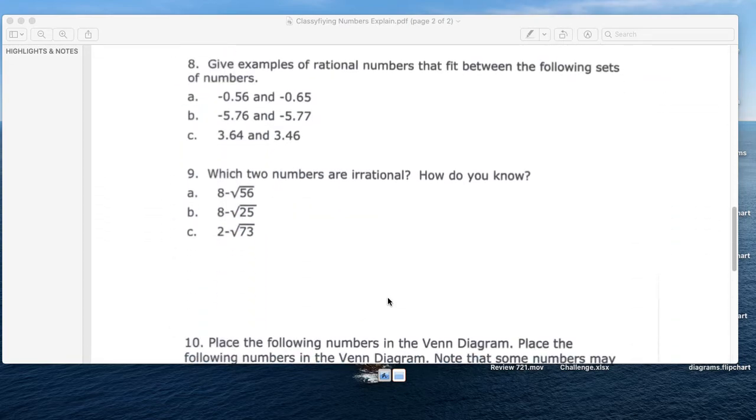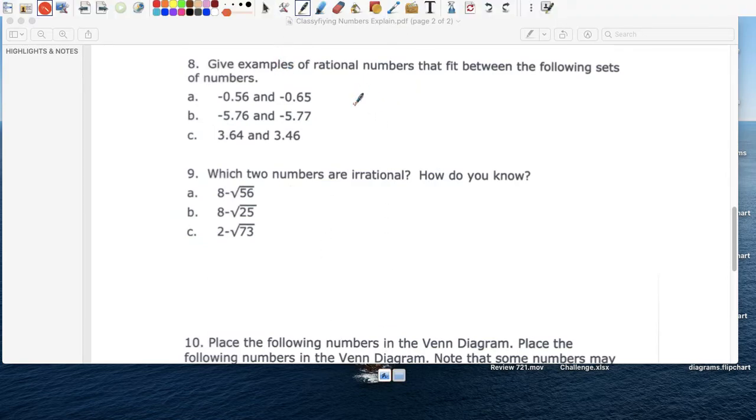Number eight, give examples of rational numbers that fit between the sets of numbers. 0.56 and 0.65, let me draw a number line. So this is zero, and this is one, and this is negative one. And then, 0.56 would be somewhere around here. 0.56 negative, and then 0.65, it's right there. There's 0.65, so a number that's in between these two spots here. Well, let's don't complicate things, about 0.57.